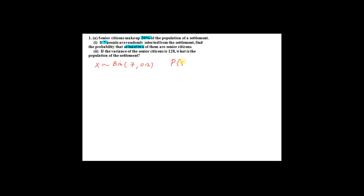For information, if this is a normal distribution, it will be stated in the question. So we have X, the number of senior citizens, which is a binomial distribution. We have 7 people selected, so N equals 7 and probability for a senior citizen P equals 0.2 — binomial(7, 0.2). For binomial distribution, P(X = r) = nCr × p^r × q^(n−r), where q equals 1 minus p. This formula is given in the formula list.